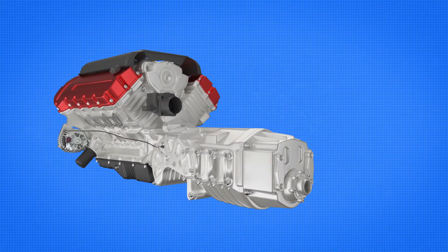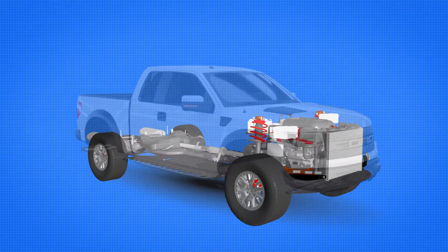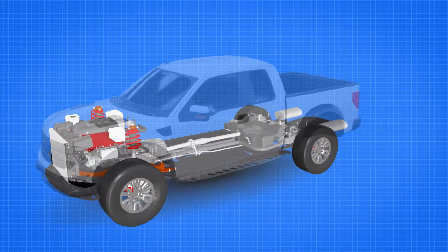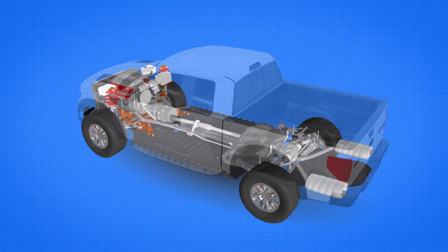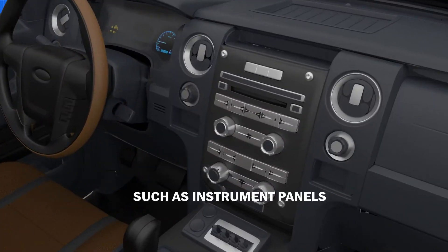Taptide screws have been used to assemble the aluminum die-cast housings of power transfer units. The interior of cars and trucks provide several opportunities where Taptide screws are used to attach seat belts, to assemble seats, and other interior components such as instrument panels.